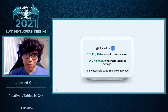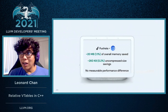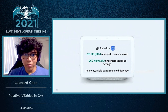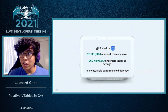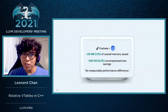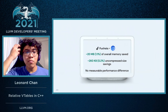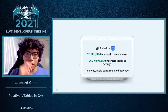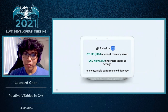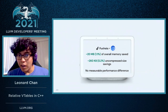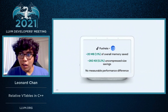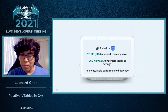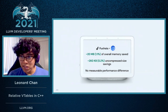And just to go on some numbers for Fuchsia — overall, we saw roughly about 20 megabytes of overall memory saved from various end-to-end tests, which is good. That's the main benefit that we were aiming for. In terms of size savings, we didn't see that much.